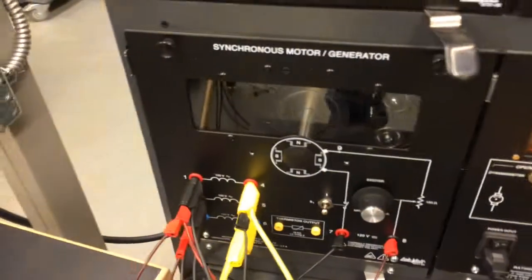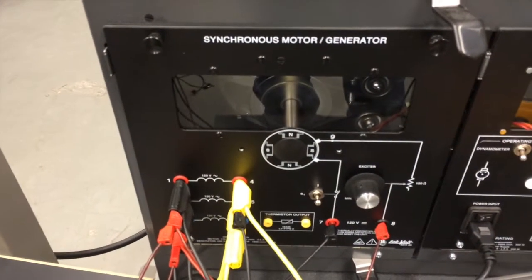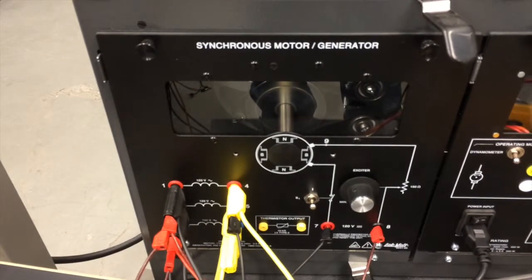When you deplete the field, there's less lines of force to cut. Those alternator windings are not cutting as many lines of force because the overall field's been depleted.